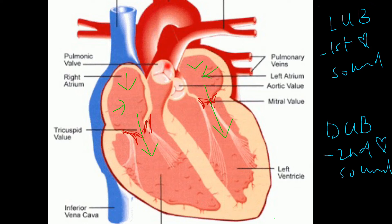The semilunar valves are closed during ventricular diastole — when the ventricles are filling up with blood flowing from the atrium. When the ventricles relax, there is lower pressure, which would tend to pull blood back from the pulmonary artery and the aorta. However, the semilunar valves snap shut, preventing the backflow of blood back into the ventricles.